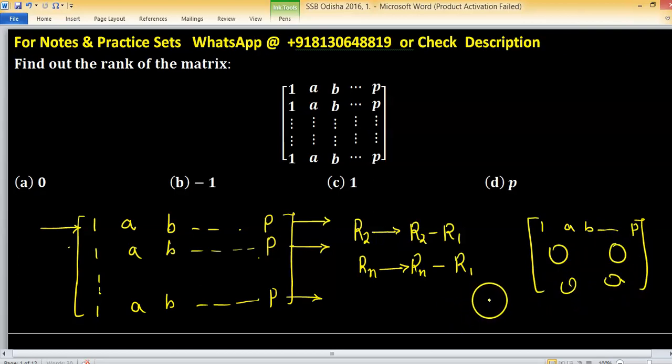So there is only 1 non-zero row. So rank of this matrix, call this matrix as A, is 1.